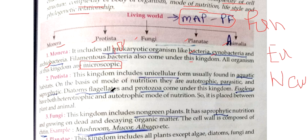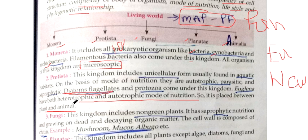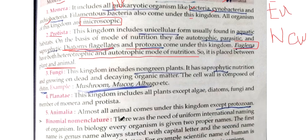The second kingdom is Protista. This kingdom includes unicellular organisms from aquatic habitats. These include autotrophs, parasites, saprophytes, diatoms, flagellates, and protozoa. Protista usually have both heterotrophic and autotrophic modes of nutrition, placing them between Plantae and Animalia. Important examples to remember: diatoms, flagellates, and protozoa are related to Protista.